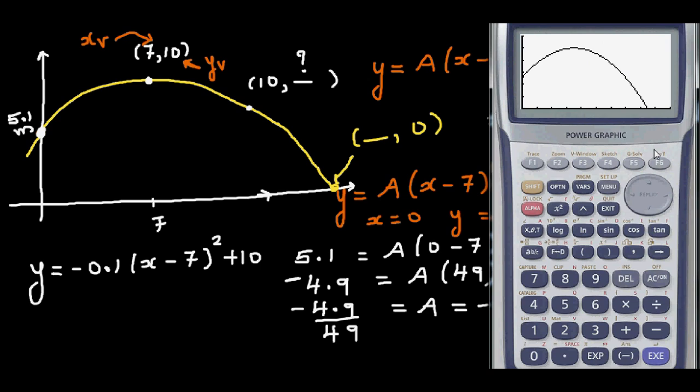So we'll need to confirm: y-intercept is 5.1, and maximum is 7, 10. We want to find the y when x is 10. So when x is 10, that would be 9.1.